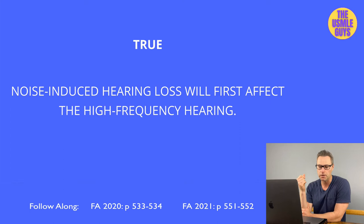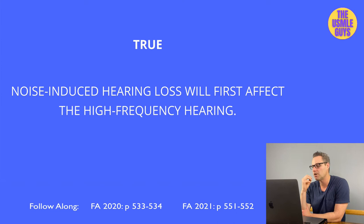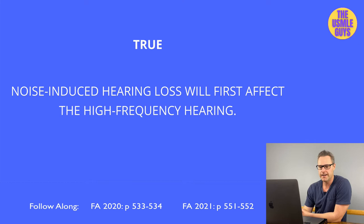Presbycusis often presents with difficulty hearing speech — the affected person may say others are mumbling. Higher frequency sounds are mainly affected due to destruction of hair cells at the base of the cochlea. Lower frequency sounds are often preserved, making it easier to hear men's voices versus women's voices due to their lower frequencies.